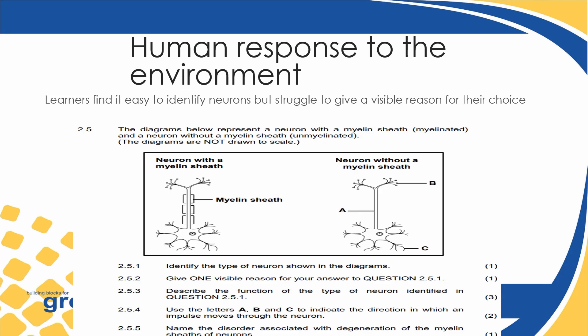Also, on the topic of human response to the environment — as much as we are good at identifying the types of neurons, we must also be able to give a reason why we identified that particular neuron. For example, a question might say: identify the type of neuron shown in the diagram. Learners will easily say it's a motor neuron. Then the second question says, give one visible reason. What is visible that makes you say this is a motor neuron? This neuron is multipolar — in other words, there are many extensions arising from this particular neuron. That is why we say this neuron is a motor neuron.